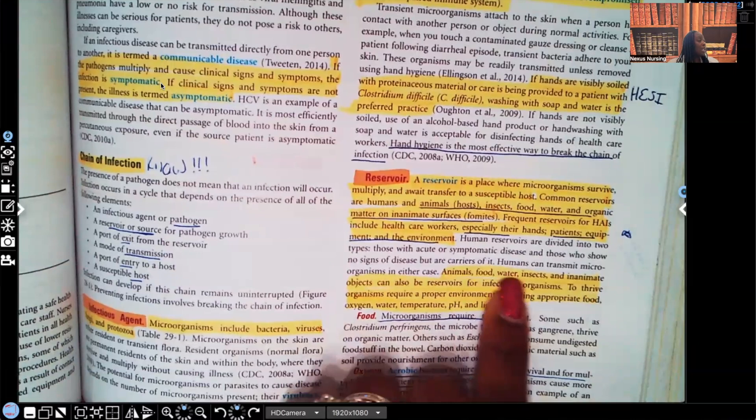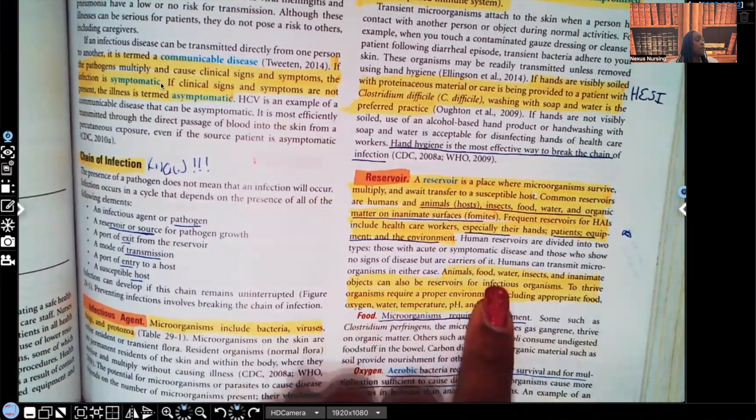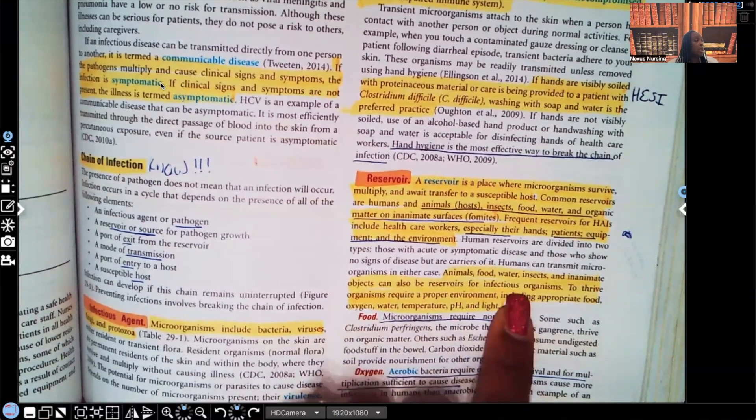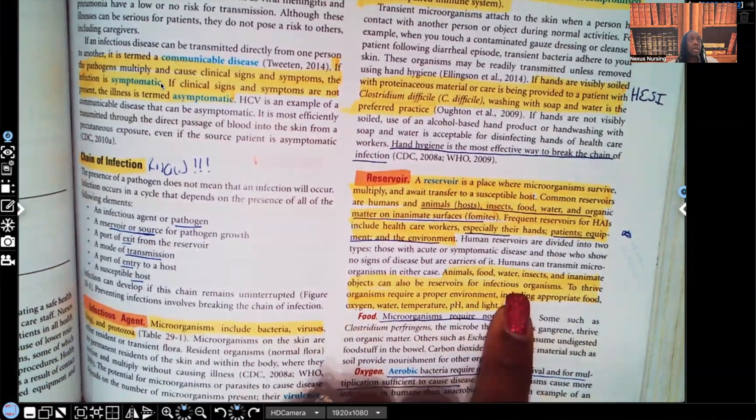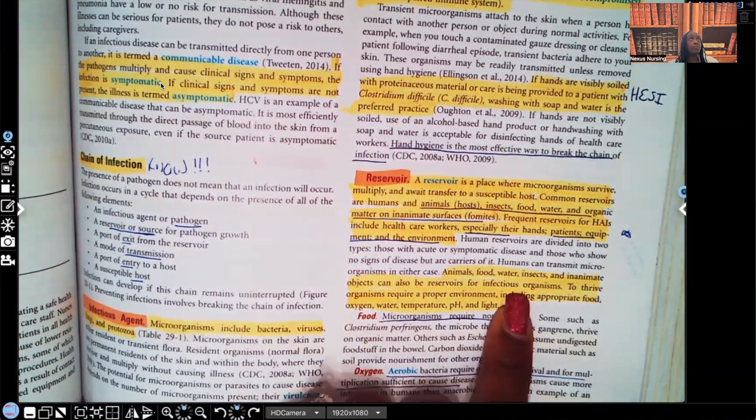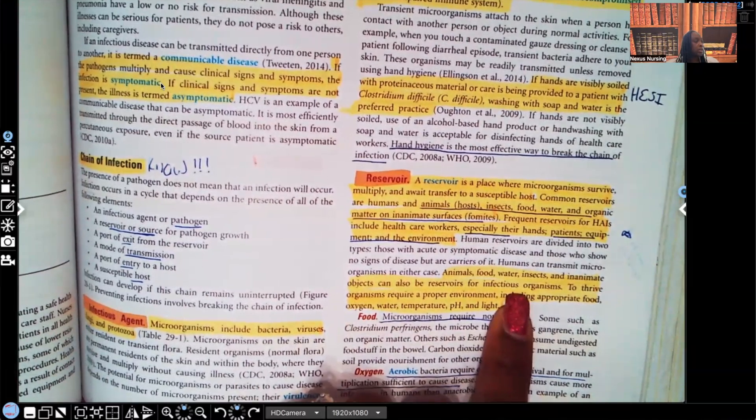Patients, equipment, and the environment. And that's why it's so important to wash your hands. That's why it's so important to sanitize equipment. You finish taking the patient's blood pressure, you check their apical pulse, you wipe down your equipment with a wipe that has been approved by the facility. But you need to clean the equipment as well. Animals, food, water, insects, and inanimate objects can also be reservoirs for infectious organisms. Remember, the reservoir is where they grow and they multiply. This is where, let's just keep it growing and multiplying.